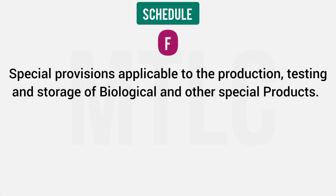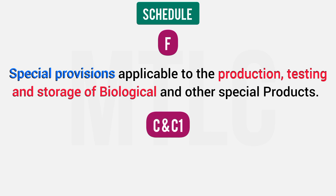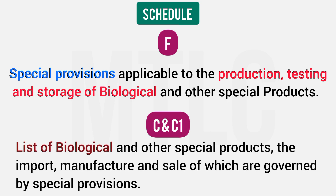Schedule F covers biological and other special products with special provisions regarding their production, testing, and storage. Schedule C and C1 list the biological and other special products, covering how you import, manufacture, and sell them.